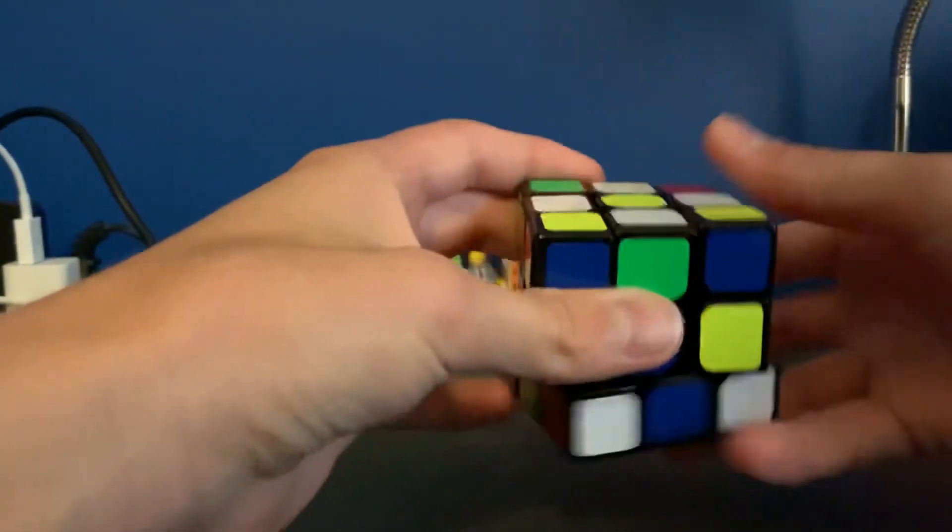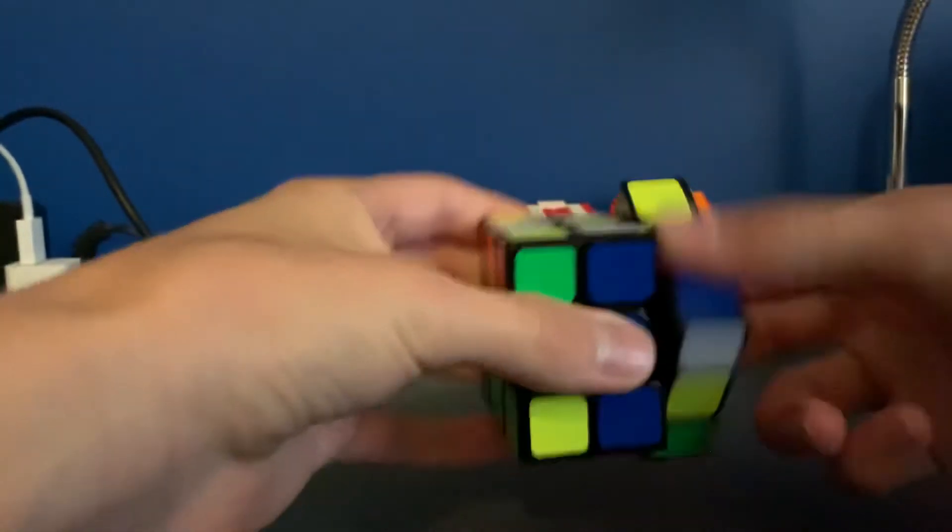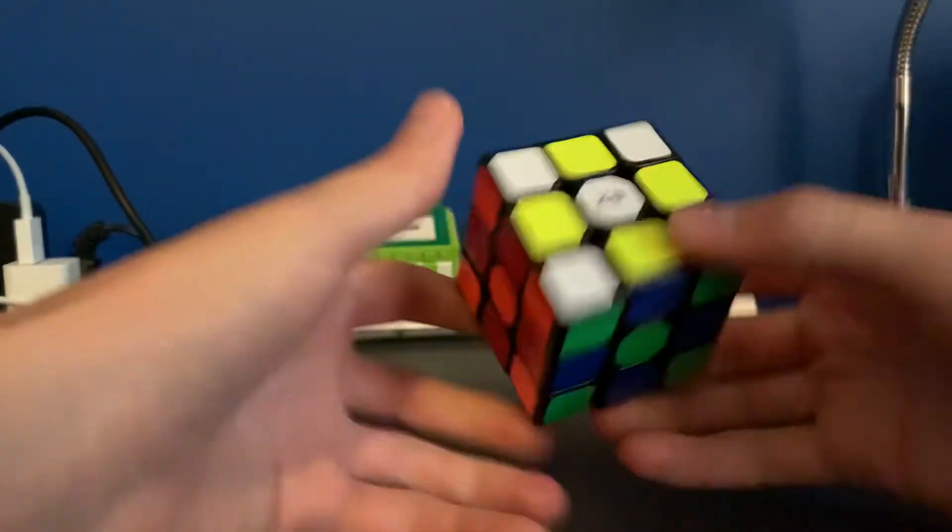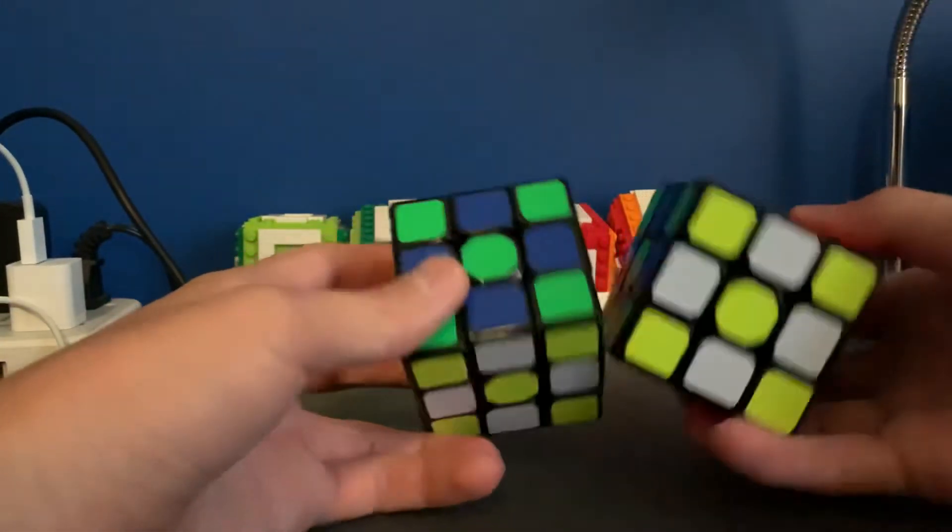And all these pieces are in the right spot. So I'm just going to use our beginner's method algorithm. And there we go. It's solved into a checkerboard pattern.